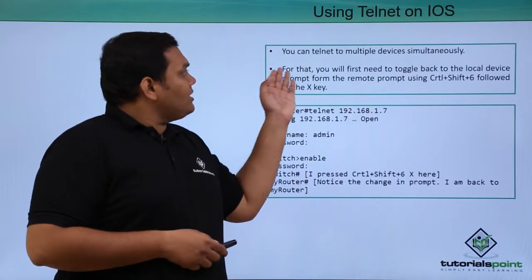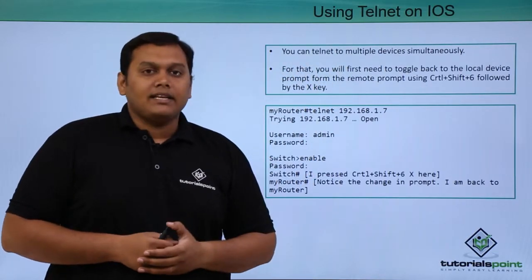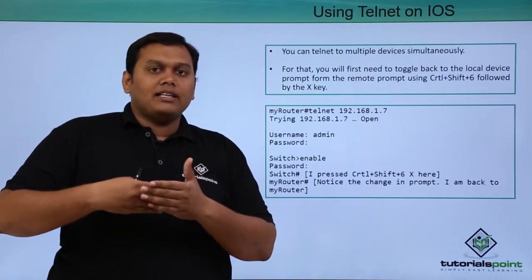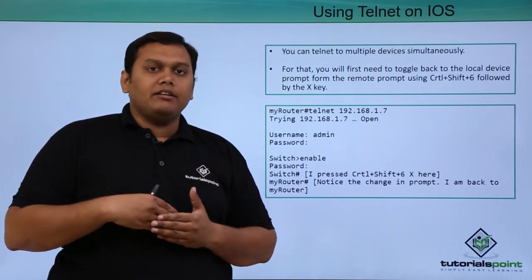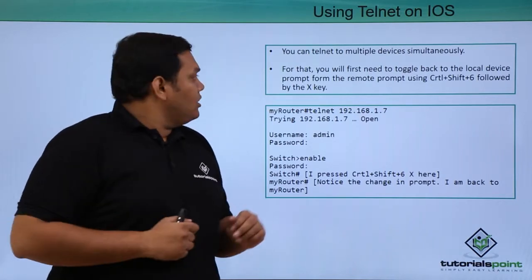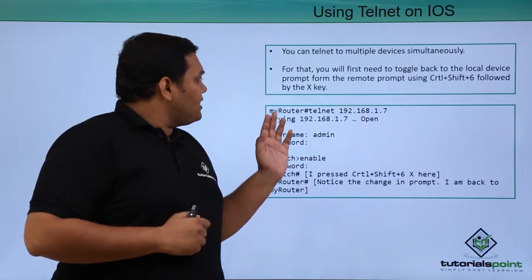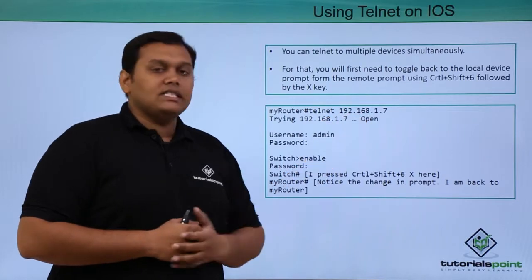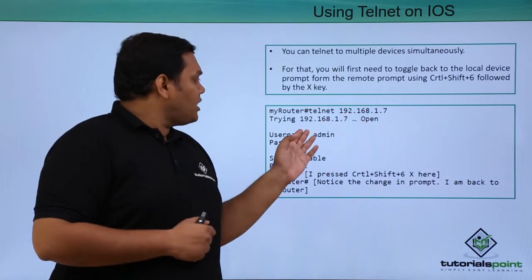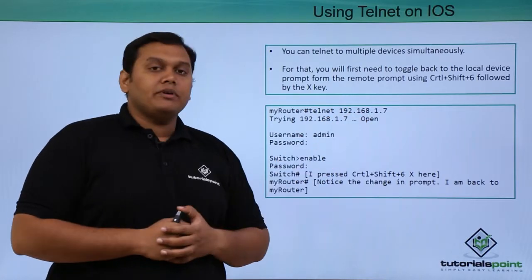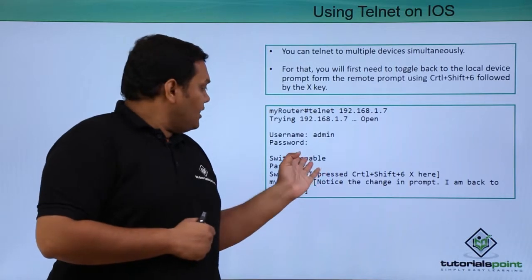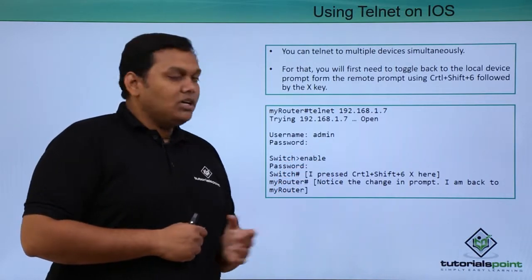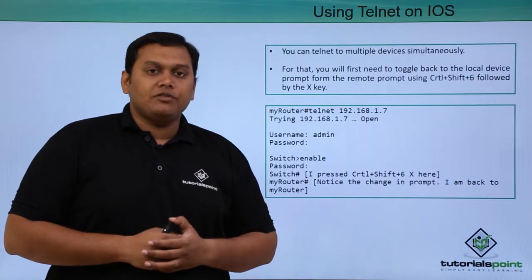You can telnet to multiple devices simultaneously. The sessions will be running in the background, and you can come back to the main device, which is your router. For example, telnet into the switch at 192.168.1.7 — it will prompt you for a username and password for authentication. When you enable it, it asks for the line password, since it is an iOS device switch.